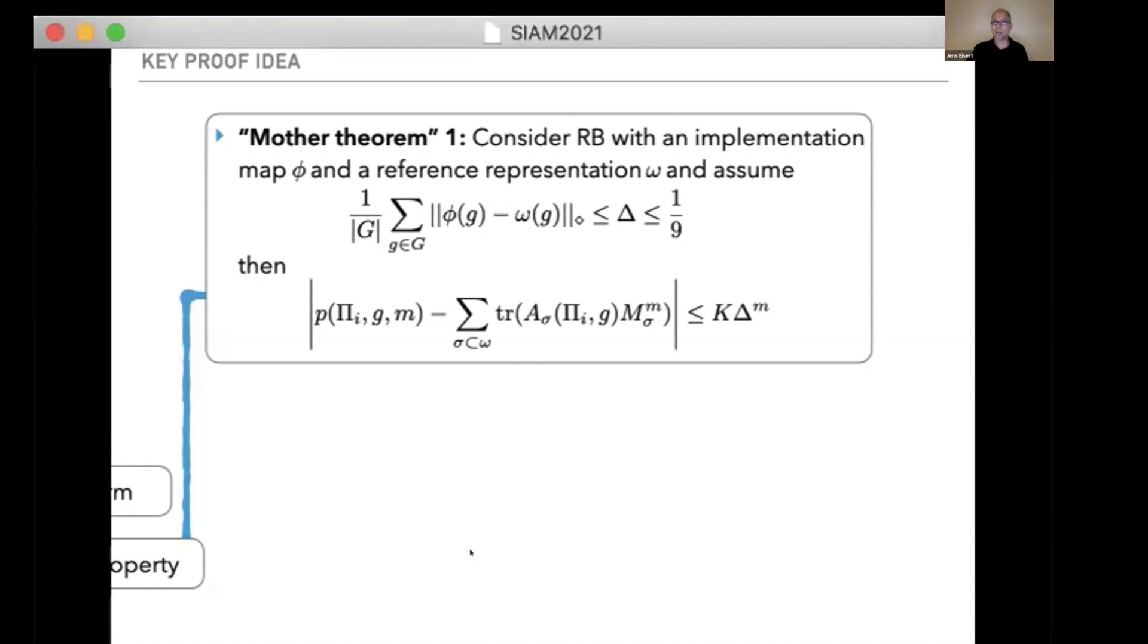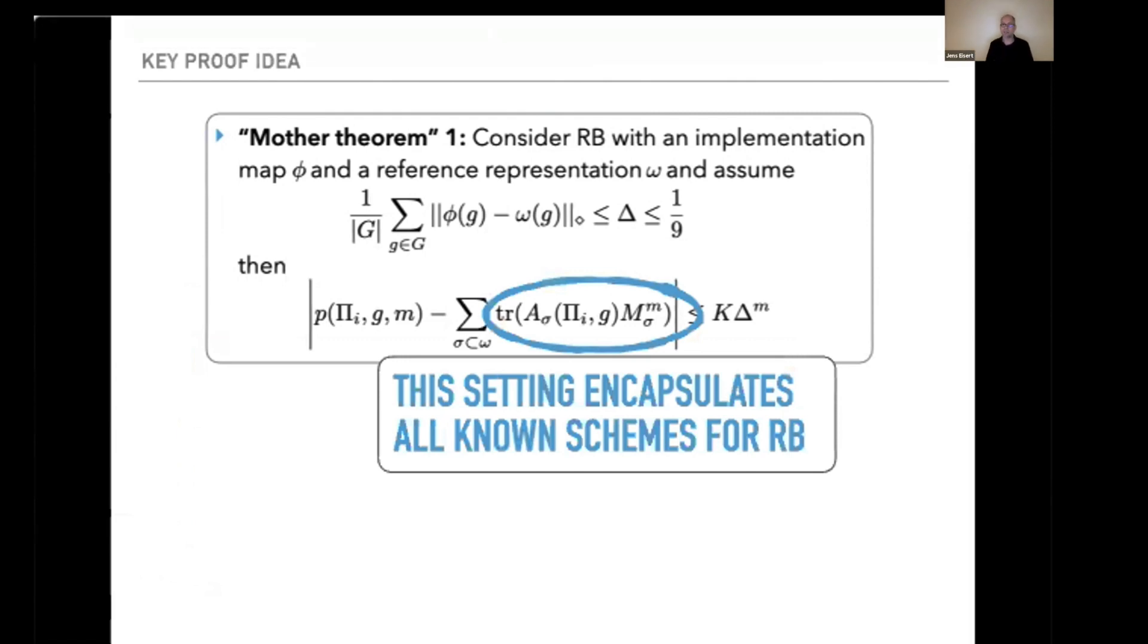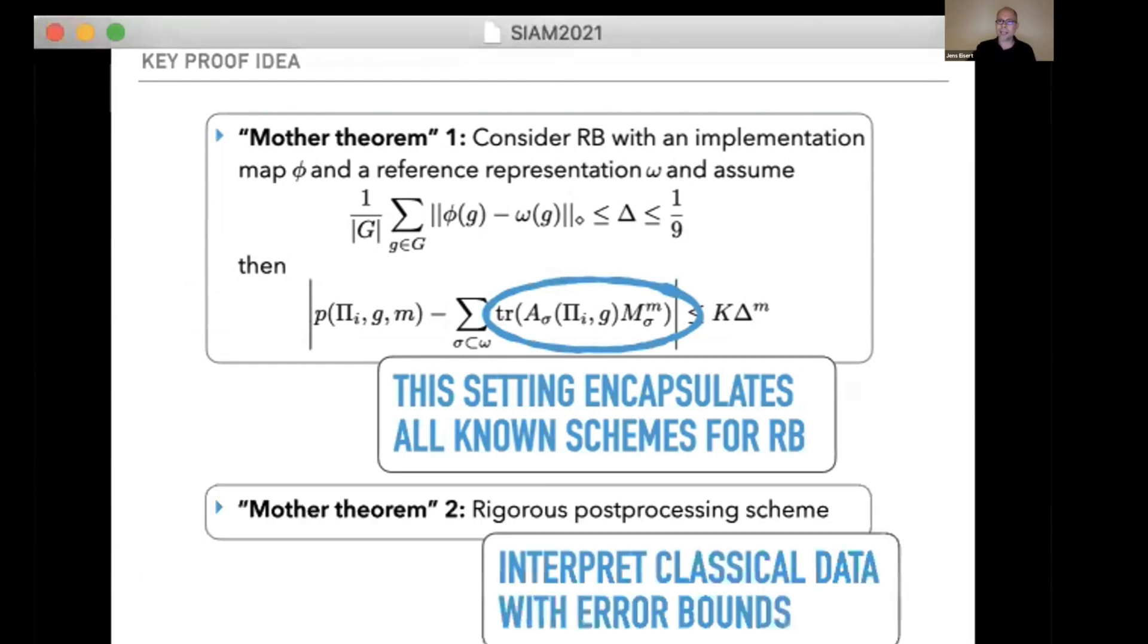The folklore claim can be rigorously justified as long as there's no multiplicities in the standard implementation, which is a case that can be characterized. It doesn't only apply to the plain vanilla but to in fact all randomized benchmarking schemes. This encapsulates the known schemes, and then one can pick their respective group and all the ingredients to make this true for all of it.